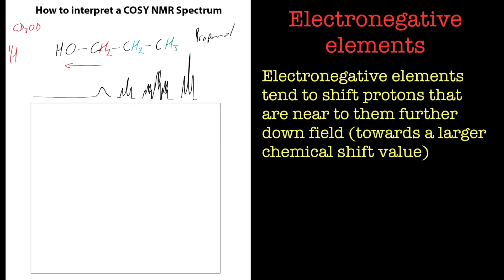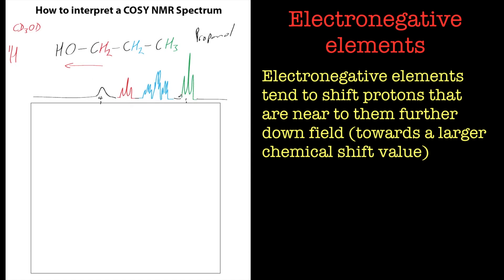This carbon is closest to the oxygen, so electron density is moving towards oxygen — that peak should be the red one. The next one along should be the blue one, and the last peak is the methyl group at the end, colored green. Obviously this is just for illustrative purposes — it won't appear in color in your real spectrum. So this is what your real spectrum would look like: this would be about 1 ppm here, and that would be near 4 ppm, so they're all within the range between 1 and 4 ppm.